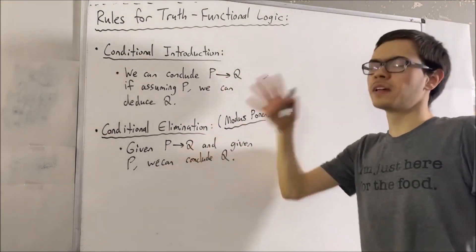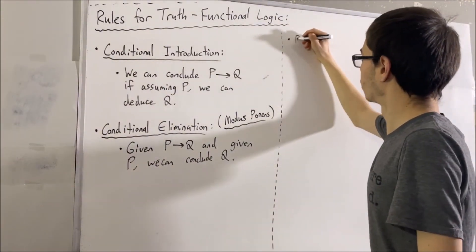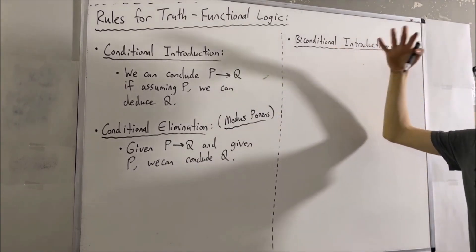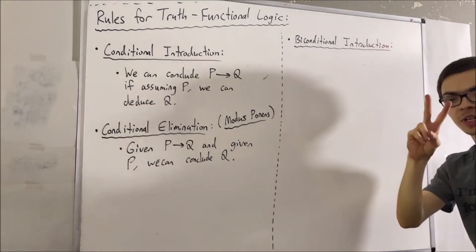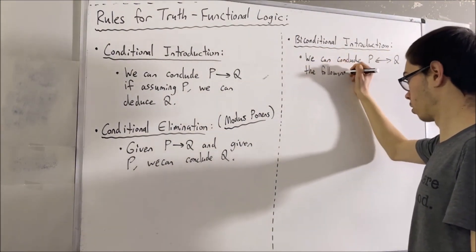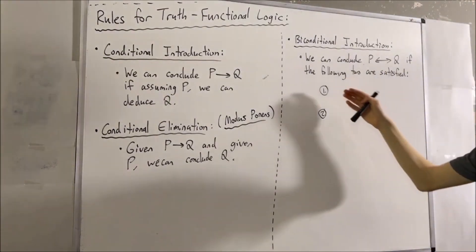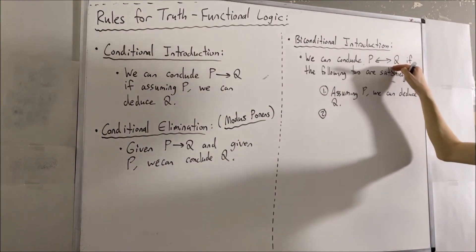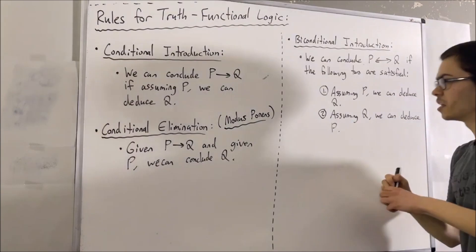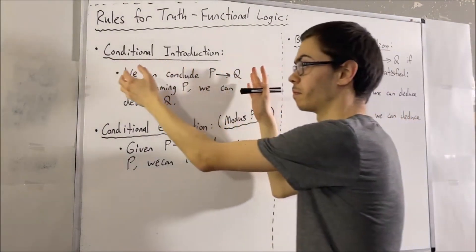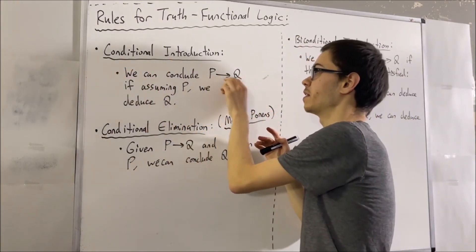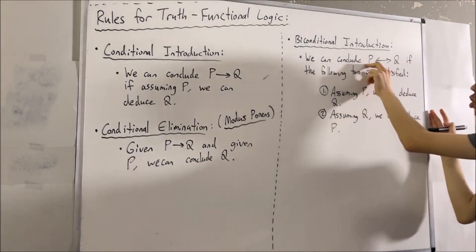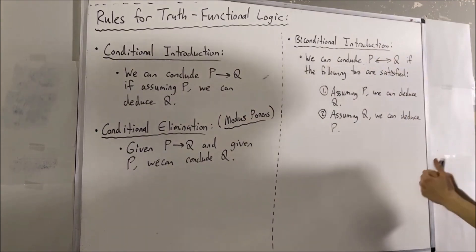Those are the rules for conditionals. Now let's talk about the rules for biconditionals. For biconditional introduction, we can conclude P if and only if Q if the following two situations are satisfied: first, assuming P, we can deduce Q; and second, assuming Q, we can deduce P. A biconditional works similarly to a conditional. The difference is, for conditionals, this says if P is true then Q is true — but a biconditional says if P is true then Q is true, and if Q is true then P is true. It works both ways.